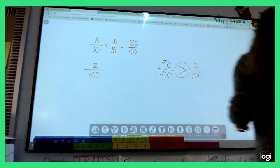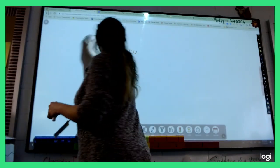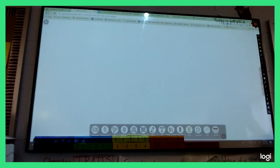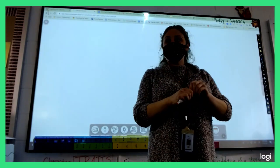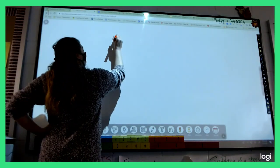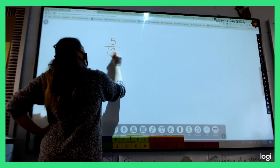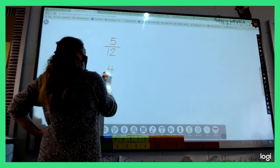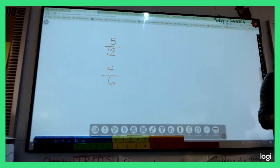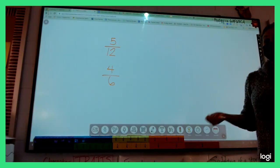So, basically, you find an equivalent fraction where your denominators match, and then it's so easy to compare. Alright? So, go ahead. If you've got your whiteboard, I'll erase it. Let's try another one. Alright. How about this? Let's compare five-twelfths to four-sixths.